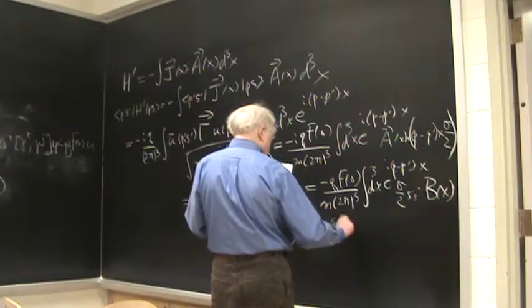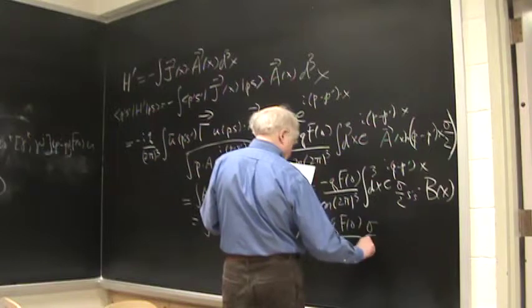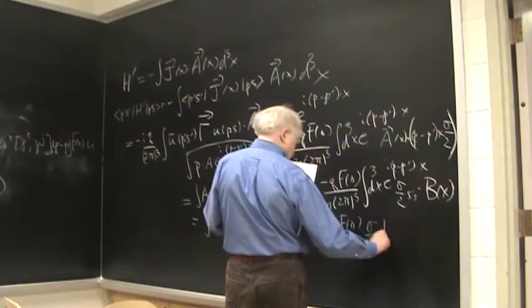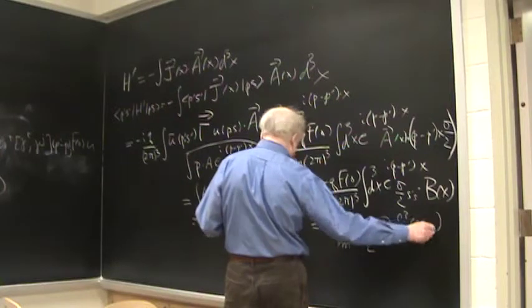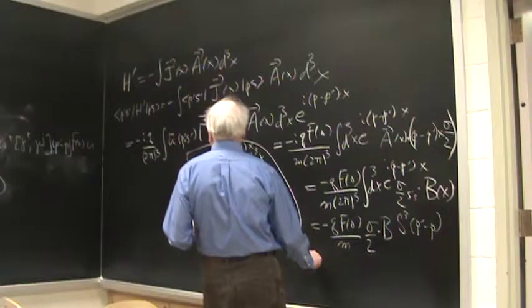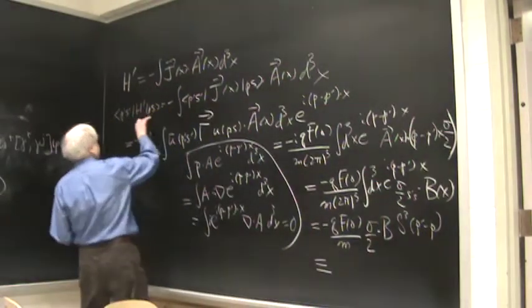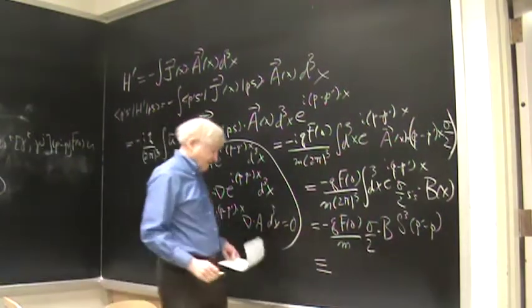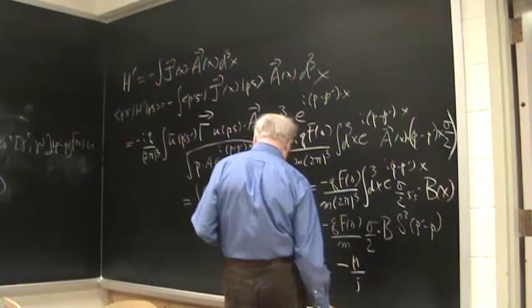The integral then gives you a delta function and altogether we have minus q f of 0 over m sigma over 2 dot b delta q p prime minus p. And this thing on the other hand, that is to say this energy, is by definition minus the magnetic moment over the spin j